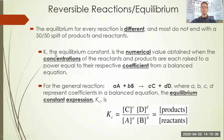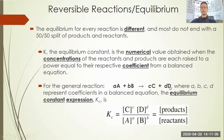The equilibrium constant, or K, is the numerical value obtained when the concentrations of the reactants and products are each raised to a power equal to their respective coefficient from a balanced equation. Let's take this general reaction: aA + bB ↔ cC + dD. The lowercase italicized letters a, b, c, and d represent the coefficients in the balanced equation — any numbers you have there to balance the equation.